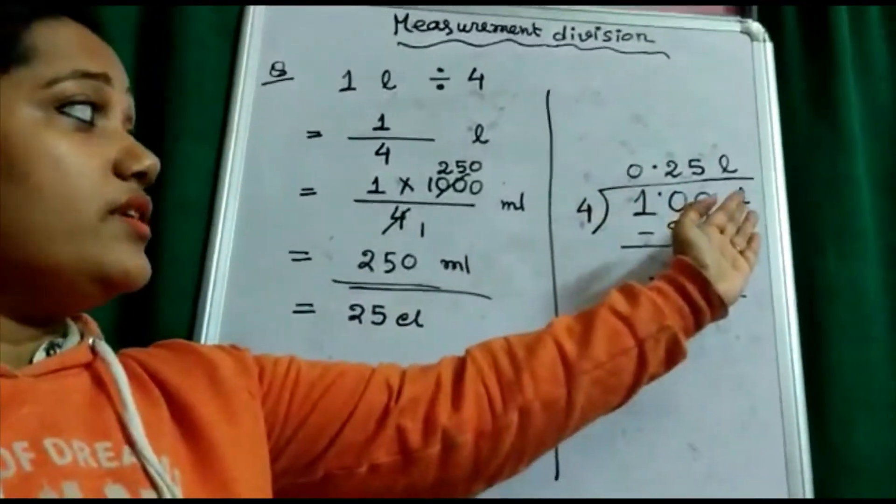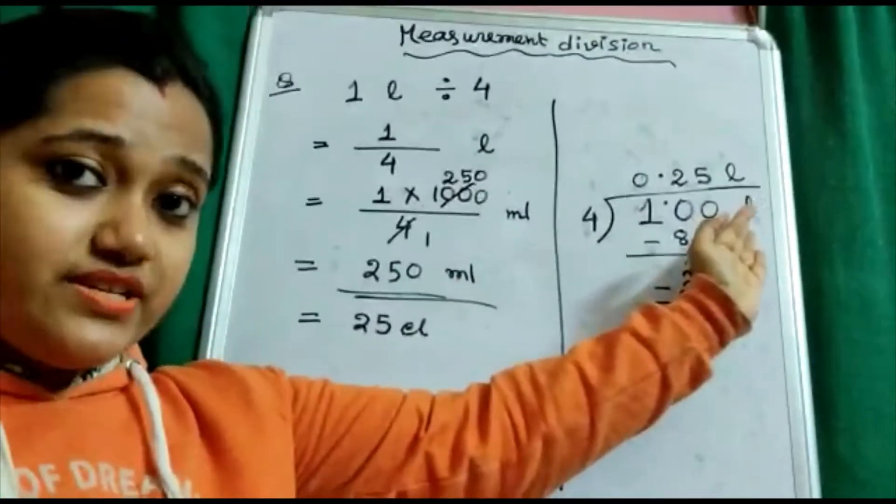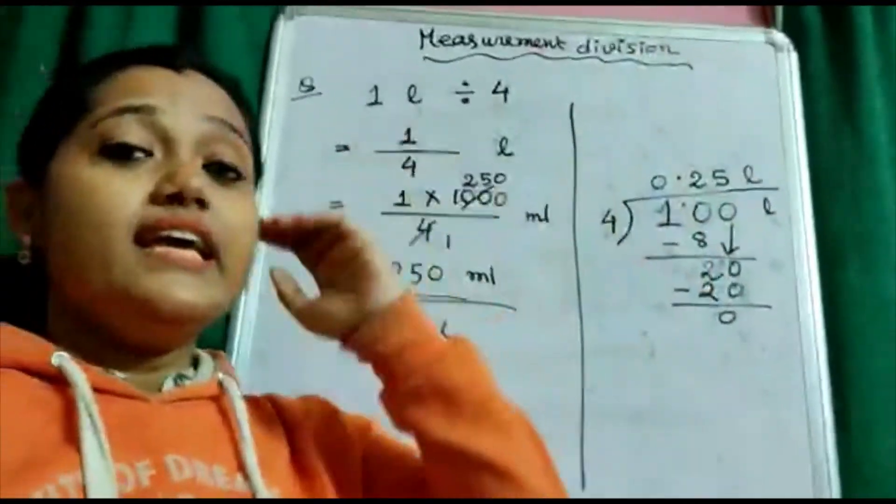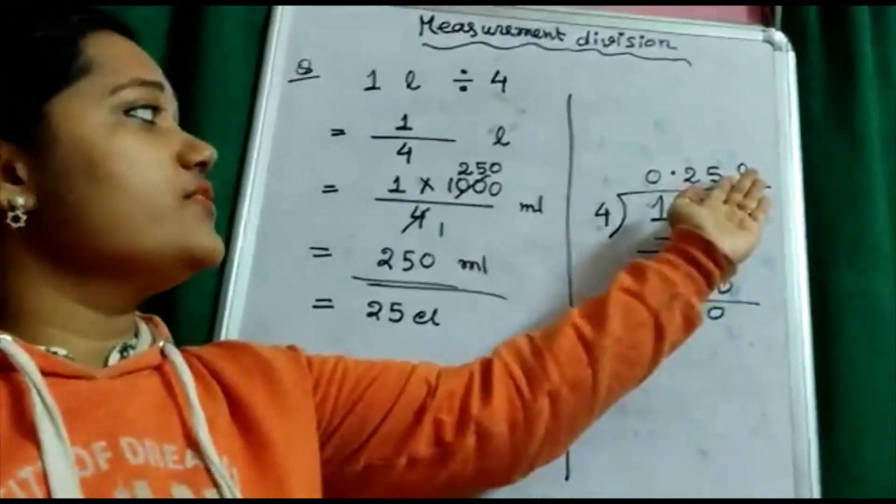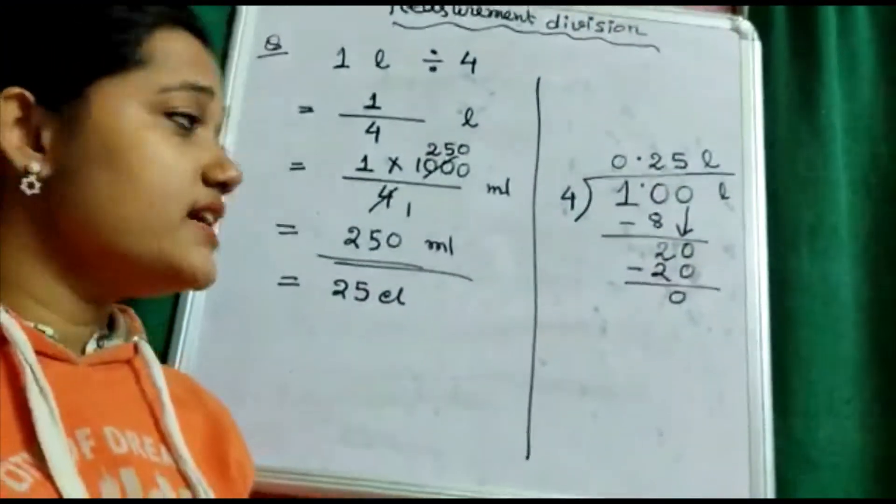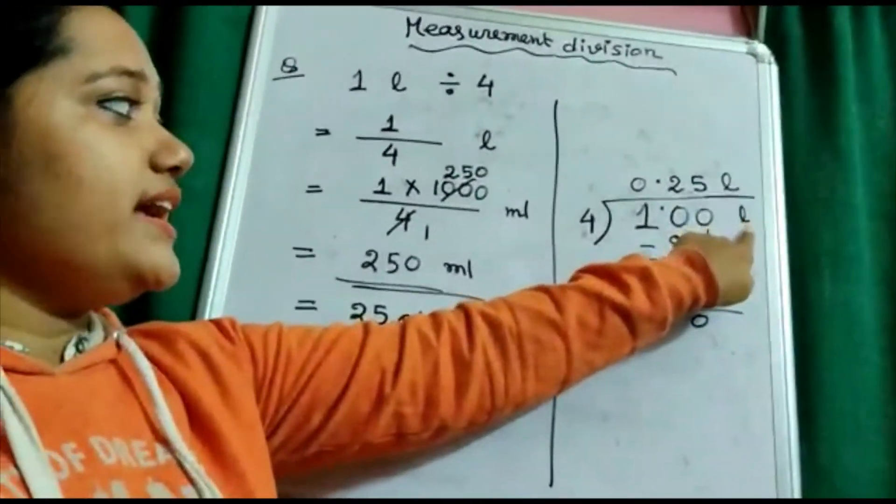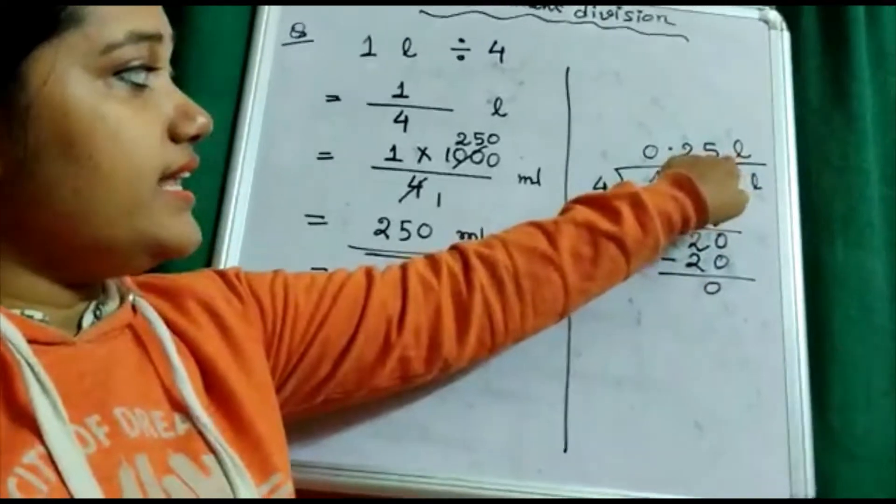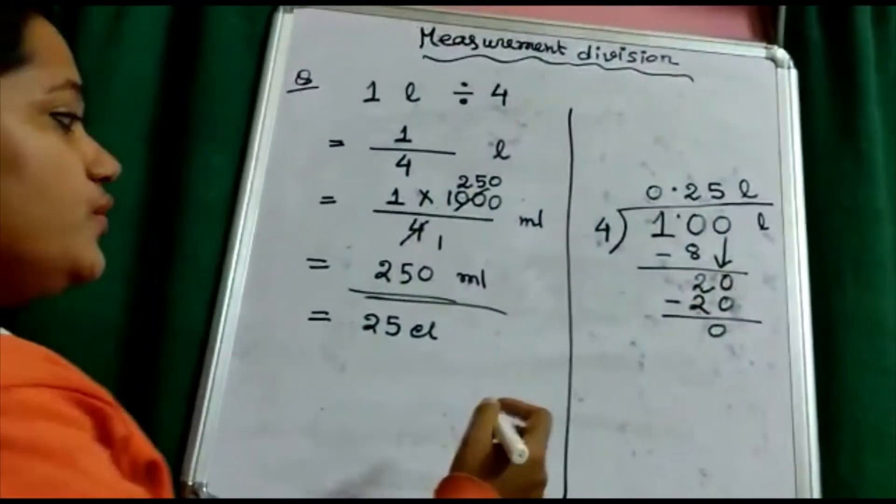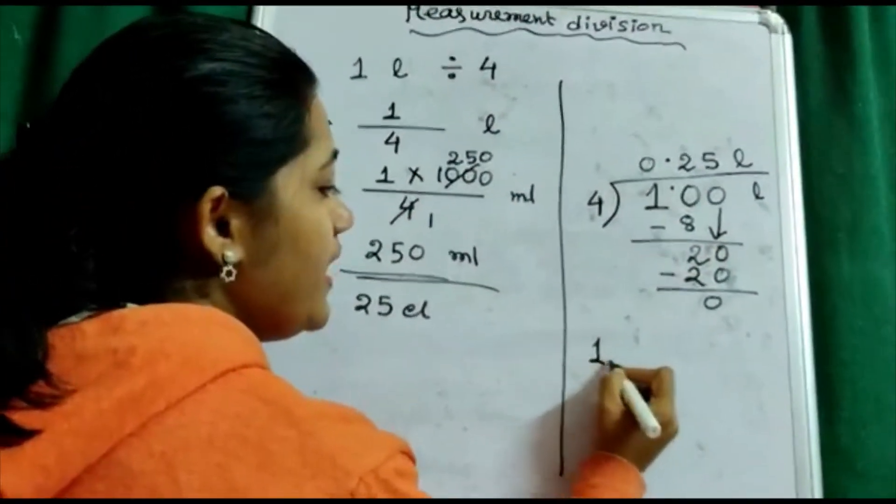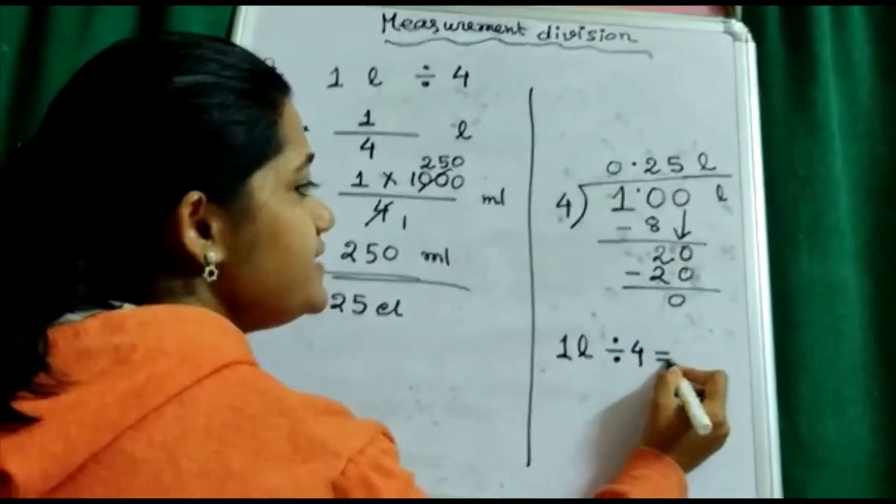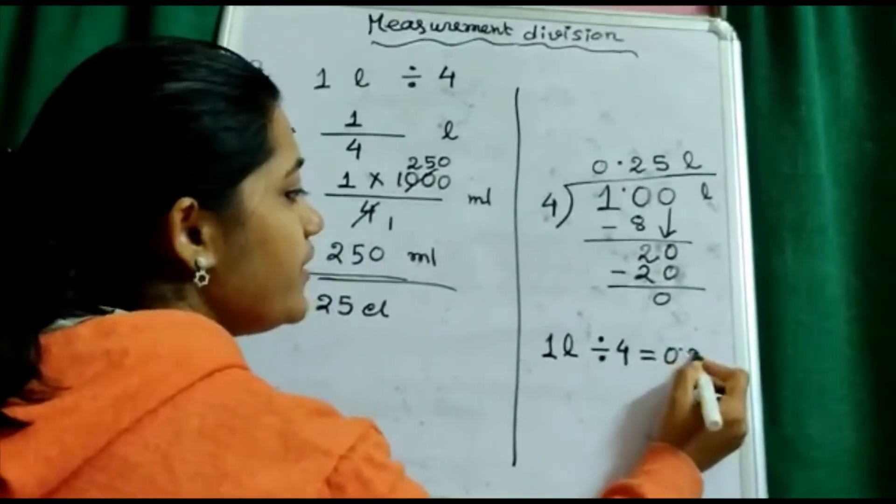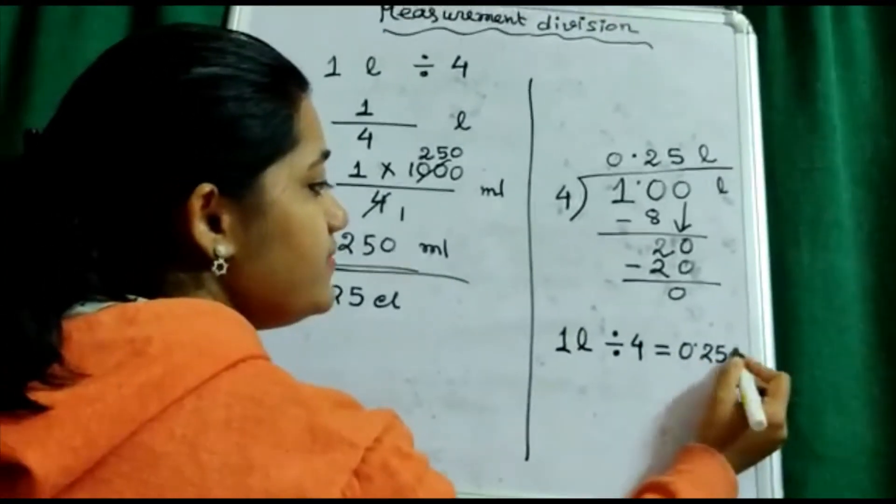Just like addition, subtraction, multiplication, we have written the smallest unit. What unit was written, that unit we have written in the answer. Here, after division, I have got the quotient, so that's why I have written liter in the quotient.